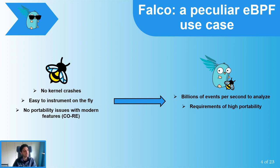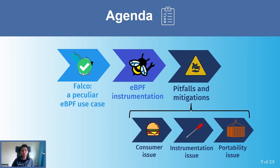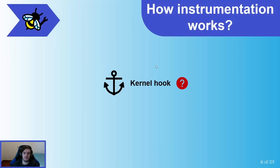We will investigate these two topics in more detail, but before doing that, we must dive into how our BPF instrumentation really works. Falco catches all the most important system events, but for doing that we need to instrument some kernel hooks. A kernel hook is a particular point in the kernel code where we can attach our BPF programs. To deeply investigate the system, we need different hooks.